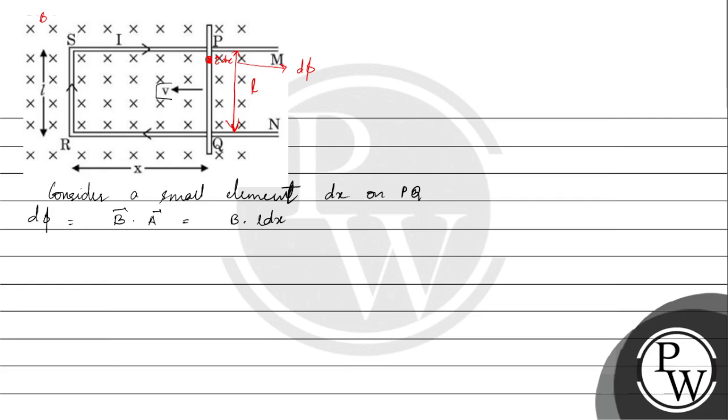Now we can find out what is the EMF. If we take the magnitude of the EMF, that will be magnitude of dΦ by dt. We just need magnitude. So dΦ by dt will be equal to BL into dx by dt.